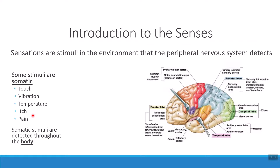All of this somatic sensory information is going to go to the primary somatic sensory cortex. I want you to underline, highlight, star this. The primary somatic sensory cortex is the place where we have the sensory homunculus, that weird map. So all of my general sensory information from touch, vibration, temperature, itch, and pain is all sent to the same place in the parietal lobe — to that sensory homunculus.